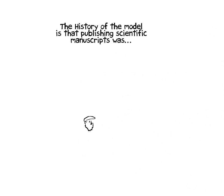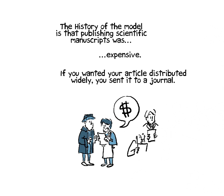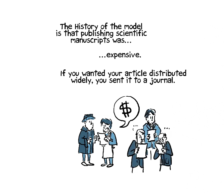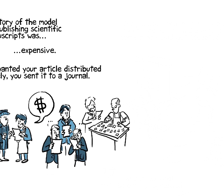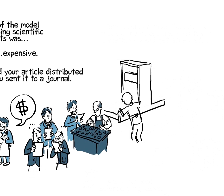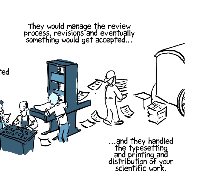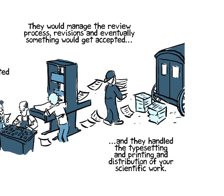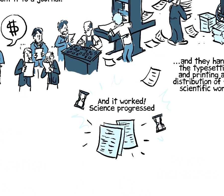The history of the model is really publishing scientific manuscripts, especially ones with complex, detailed color figures, was expensive. And so if you wanted your article distributed broadly and widely, you sent it to one of these journals and they would manage the review process, communications with reviewers, revisions, and eventually something would be accepted. They handled the typesetting, printing, and distribution of your scientific work. It worked great. Science progressed pretty well, and it became a good way to distribute scientific papers.